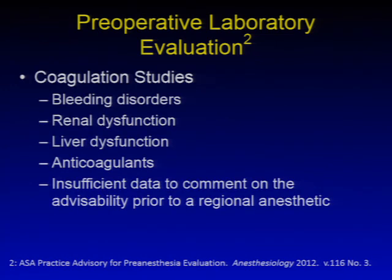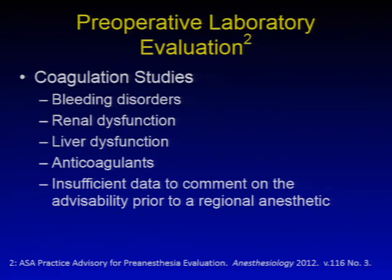With coagulation studies, anyone with pre-existing bleeding disorders such as von Willebrand's disease or hemophilia should have them evaluated preoperatively. Patients with renal dysfunction — where uremia can affect platelet function — and patients with liver dysfunction should have coagulation studies to evaluate clotting factors. Patients on anticoagulant medications should also be tested. There is insufficient data to comment on advisability prior to regional anesthesia.